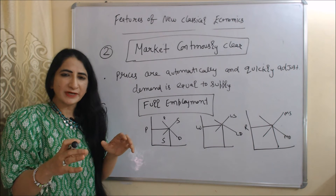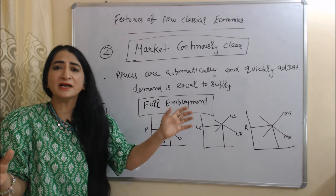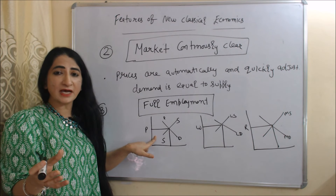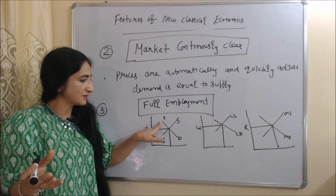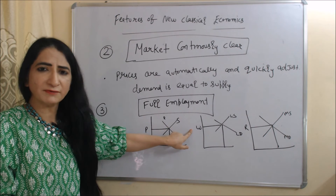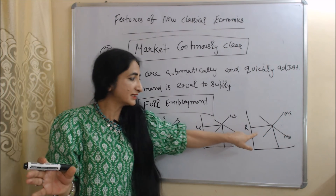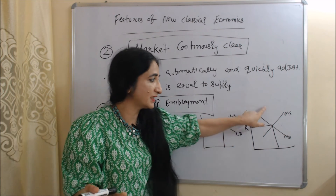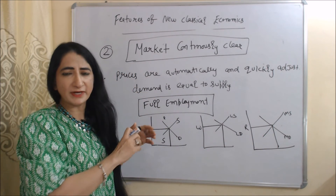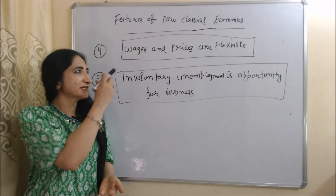Next, according to new classical economics, markets continuously clear — prices automatically and quickly adjust to where demand equals supply. Next is full employment. If prices of goods quickly adjust so that demand and supply of goods are equal, wages quickly adjust so that labor demand and labor supply are equal, and interest rates quickly adjust so that money demand and money supply are equal, then the economy will be at full employment.